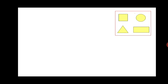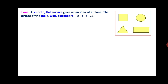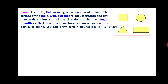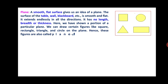The third concept is plane. A smooth, flat surface gives an idea of a plane. The surface of a table, wall, blackboard, etc. is smooth and flat. It extends endlessly in all directions. It has no length, breadth or thickness. We have shown a portion of a particular plane. We can draw figures like square, rectangle, triangle and circle on the plane. Hence, these figures are also called plane figures, as you can see in the adjoining figure.